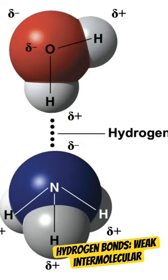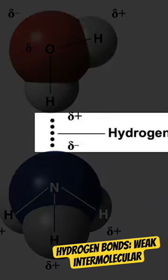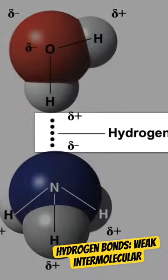Anytime you see dotted lines like this, it's telling you that this bond is a hydrogen bond. Hydrogen bonds are actually quite weak, only requiring some heat to break them.